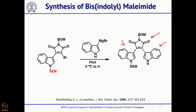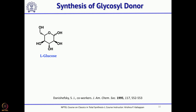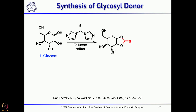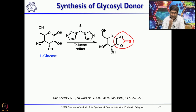Now you have to add the sugar unit on the southern side, so the sugar unit must be prepared first. He started with L-glucose and treated with carbonyl diimidazole (CDI) to form a cyclic thiocarbonate from the 1,2-diol. The reason for making this cyclic thiocarbonate was to remove these two hydroxyl groups and introduce a double bond, which was done by treating with trimethyl phosphite or triethyl phosphite.